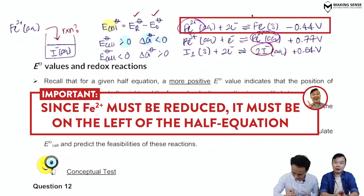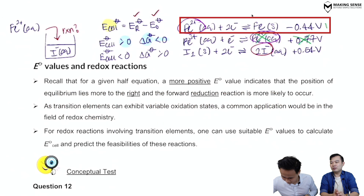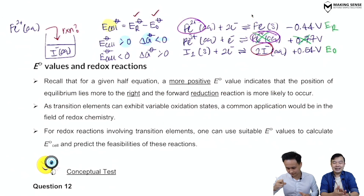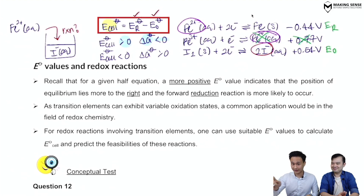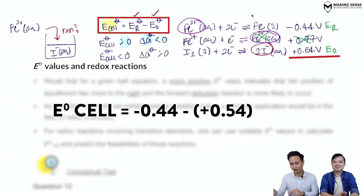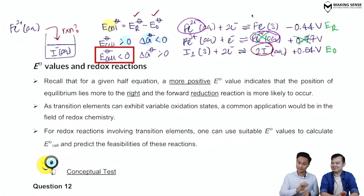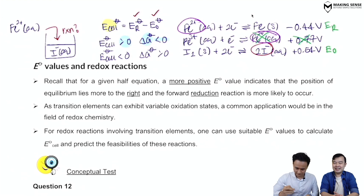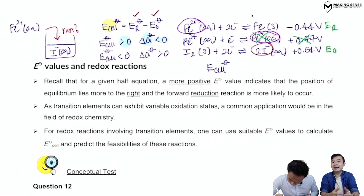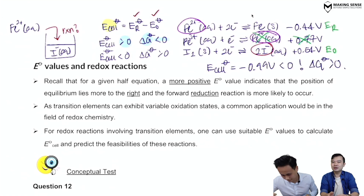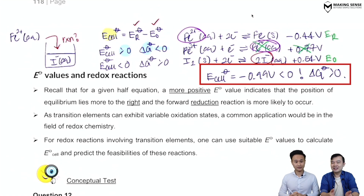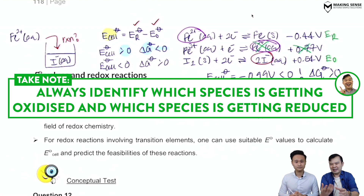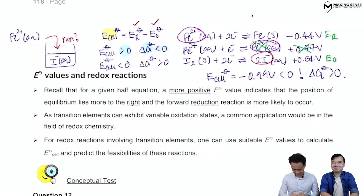Plugging into the E-cell formula: E-cell = E-reduced − E-oxidized = −0.44 − (+0.54) = −0.98 V. The E-cell value is negative, meaning ΔG > 0 — the reaction is non-spontaneous, so nothing will happen. A common mistake is to simply take the bigger number minus the smaller number; that is incorrect. You must always first identify which species is being oxidized and which is being reduced based on the original reactants present. This strategy is different from an electrochemical cell — there is no electricity involved, just a redox reaction in a beaker.